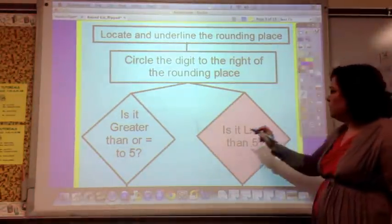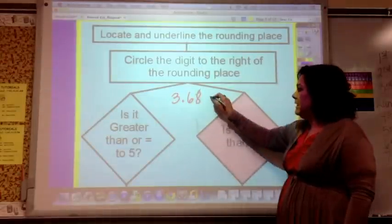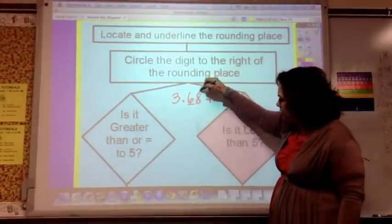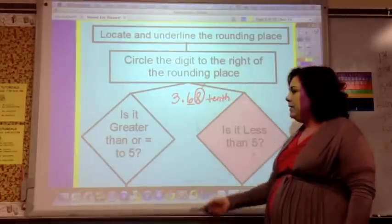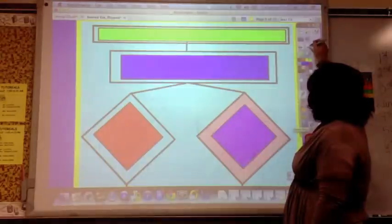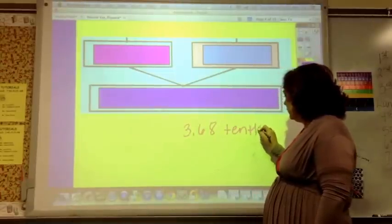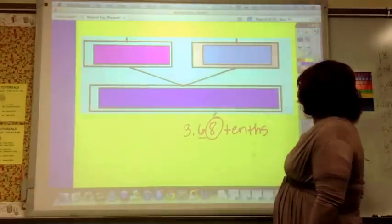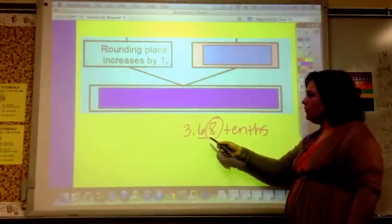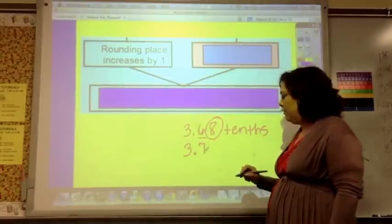So an example of this, we said round to the nearest tenth. So we would underline the tenth and circle the eight. And then we say, is it greater than or equal to five? So eight is greater than or equal to five. If it's greater than, we increase the rounding place by one. So the rounding place is the underlined one. So this would become three and increase six by one, it would become three and seven tenths.